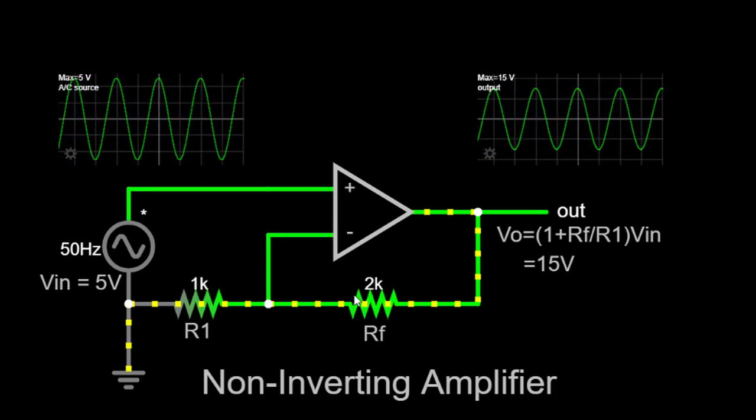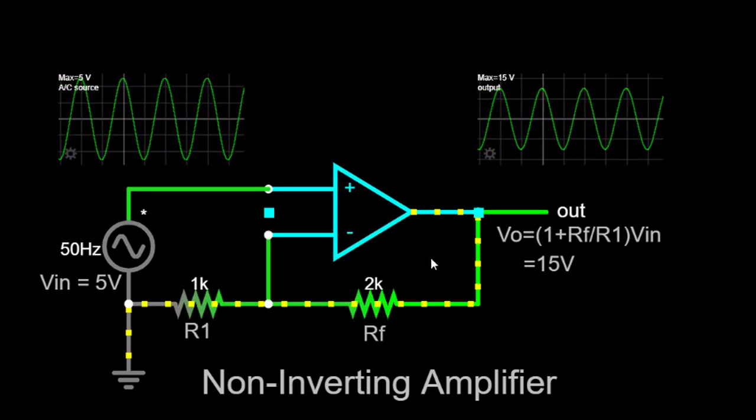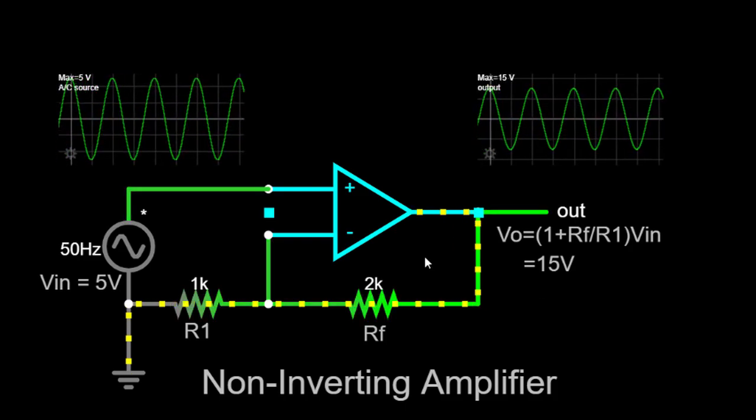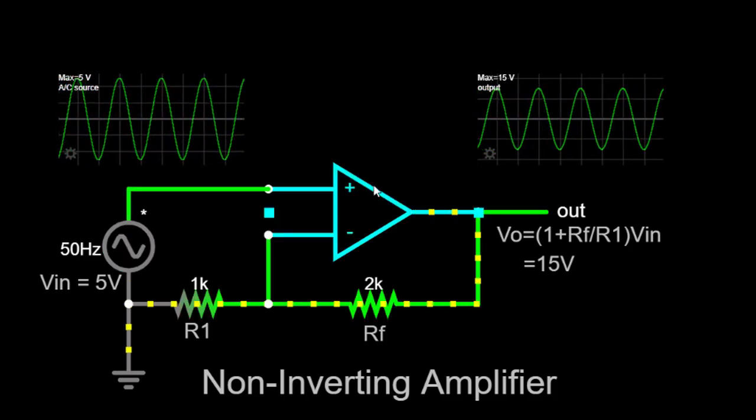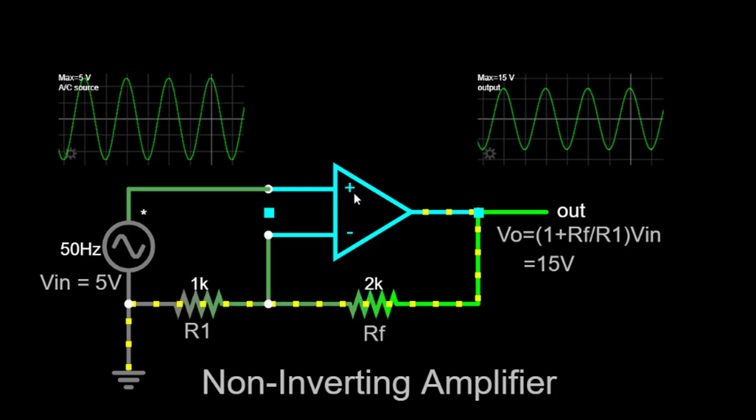Here is a quick overview of the connections in the non-inverting amplifier circuit. The input signal is connected to the non-inverting terminal of the op-amp, usually marked with a plus sign.